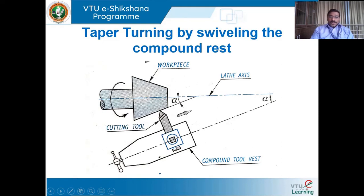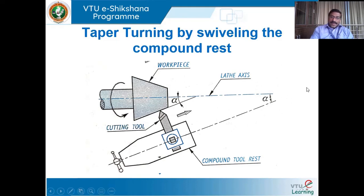The tool is mounted in the tool post, which rests on the compound slide. By rotating the hand wheel, the entire compound tool rest can move in a linear direction. The job is held straight in the chuck so that the axis of the workpiece is collinear with the axis of the lathe. What is made inclined is the compound tool rest — it is given an angle, swiveled up to 360 degrees. We set an angle alpha equal to tan inverse of (D minus d) divided by twice the length of the workpiece.